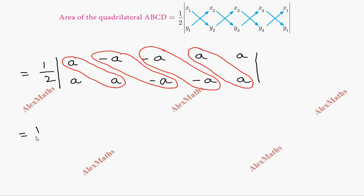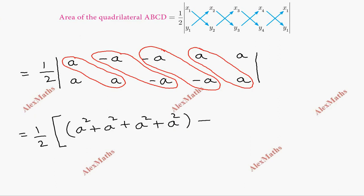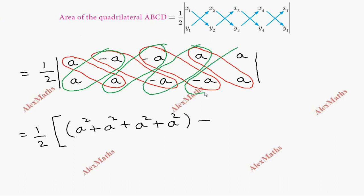So we get 1 by 2, bracket open, and we separate out the terms. We have a squared plus a squared, then plus a squared, and then minus a squared. Double up the terms — we get 1 by 2 times the sum. This gives us a squared, plus a squared, plus a squared, minus a squared, bracket close.